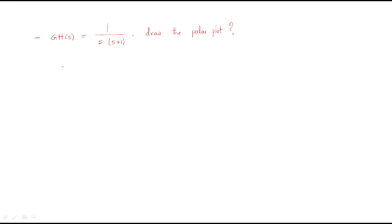Hello everyone. In this session we'll discuss a different problem in the polar plot. The problem is G(s) = 1 / [s(s+1)]. We'll draw the polar plot. Up to now we discussed problems with poles only in the denominator. Here, a pole at origin is added, and we will discuss how the polar plot will vary.